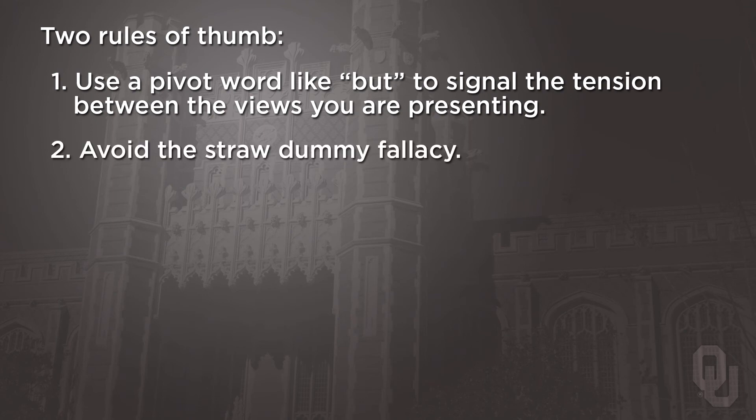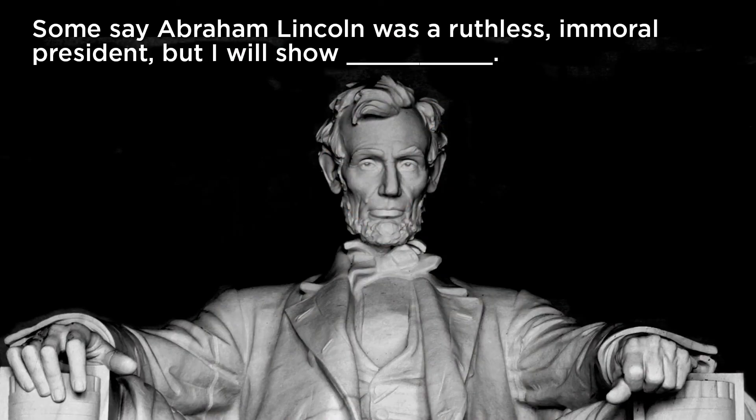The second rule of thumb is to avoid the straw dummy fallacy. A straw dummy is an argument you set up to be deliberately weak so you can easily knock it down. For example: 'Some say Abraham Lincoln was a ruthless, immoral president, but I will show...' — that's a straw dummy since no one would seriously argue that. Instead, be sure you make the view you're moving beyond believable, perhaps by explaining it or even providing a little evidence for it. Zagari didn't just say 'while this might seem to confirm the feminist interpretation' — she preceded that with a fair and believable explanation of that view.